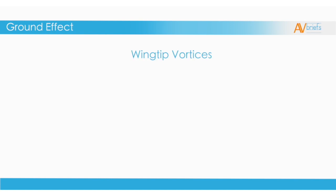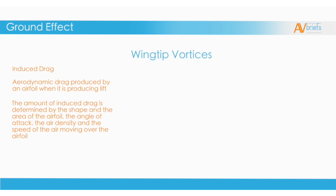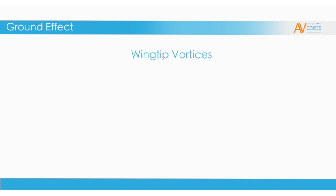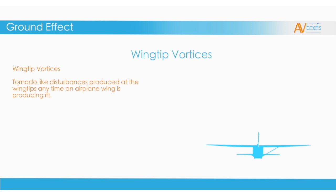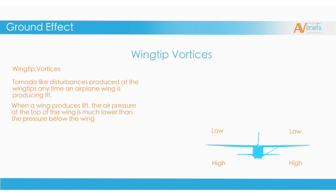Wingtip vortices are a major contributing factor to ground effect. Induced drag is aerodynamic drag produced by an airfoil when it is producing lift. The amount of induced drag is determined by the shape and area of the airfoil, the angle of attack, the air density, and the speed of the air moving over the airfoil — the same as our lift formula. Wingtip vortices are tornado-like disturbances produced at the wingtips anytime an airplane wing is producing lift. When a wing produces lift, the air pressure at the top of the wing is much lower than the pressure below the wing, so we have higher pressure below and lower pressure above.